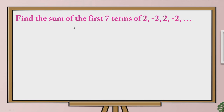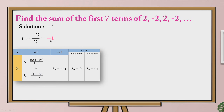The next example is to find the sum of the first 7 terms of the geometric sequence 2, negative 2, 2, negative 2, and so on. Again, we first find the common ratio: negative 2 over 2, which is equal to negative 1. Referring to our table, we refer to r equals negative 1. But we need to know if n is even or n is odd. We are asked to find the first 7 terms, therefore our n is 7, and we know that 7 is an odd number. So the formula we will use is S sub n equals A sub 1.